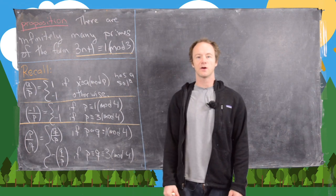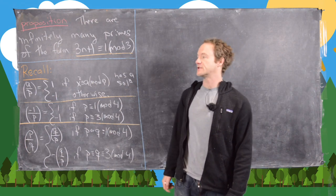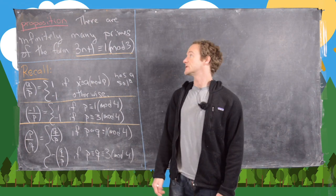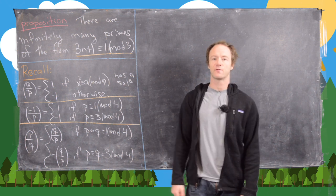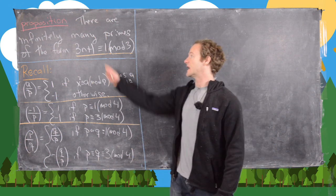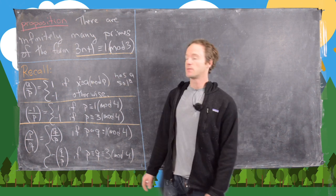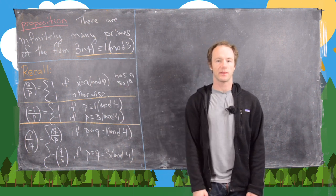In this video we're going to look at the following proposition: there are infinitely many primes of the form 3n plus 1. In other words, primes that are congruent to 1 mod 3.